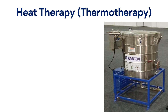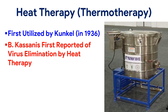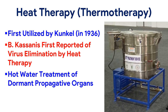Heat therapy or thermotherapy was first utilized by Kunkel in 1936, and the first report of virus elimination was by Cassanes who used heat therapy to eliminate leaf roll virus from potato in 1915. Use of hot water heat therapy eliminated 100% of grapevine fan leaf virus in grapevine, freed potato tubers of potato leaf roll virus (PLRV), tomato black ring virus (TBRV), and sugar cane streak mosaic virus (SCSMV). Heat therapy for grapevine is 45°C for 120 to 180 minutes; for sugarcane sets it is 50°C for 120 minutes; and for potato tubers it is 50°C for 17 minutes.